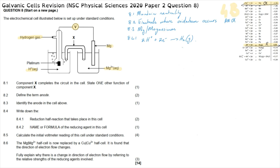Question 8.4.2 asks for the name or formula of the reducing agent. The reducing agent is the substance that makes reduction possible. Reduction here is the gain of electrons by hydrogen. The only way hydrogen can gain electrons is if magnesium gives them off — magnesium is oxidized, goes into solution as magnesium ions, and gives away two electrons that flow around the circuit allowing hydrogen to be reduced. The reducing agent is magnesium (Mg), not magnesium ions.